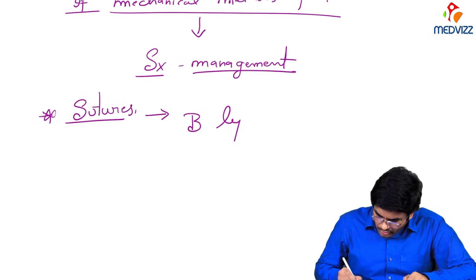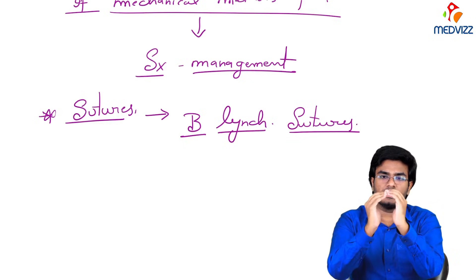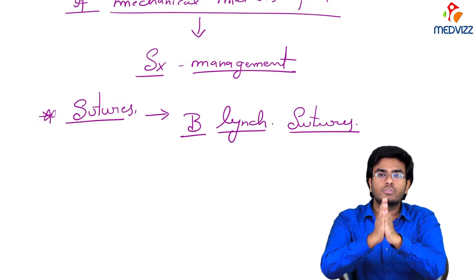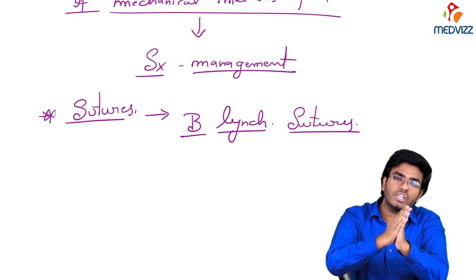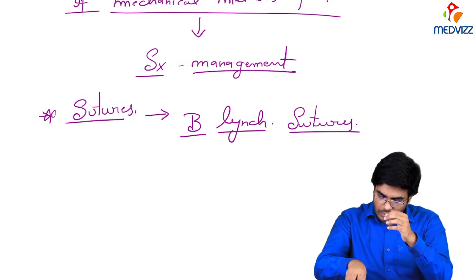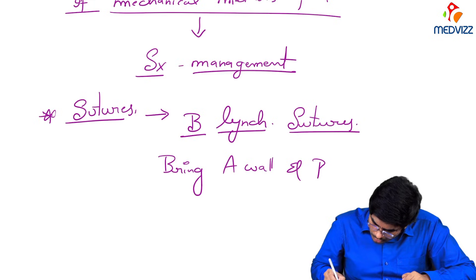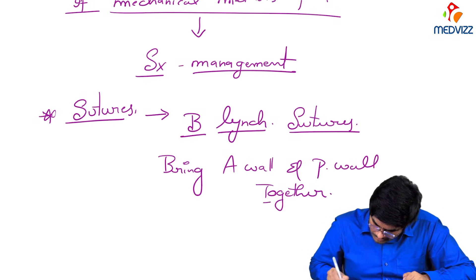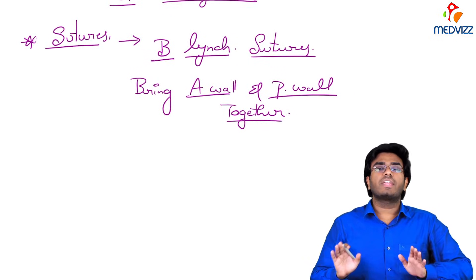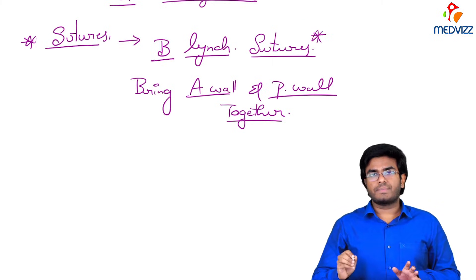The very important sutures for the exam are B-Lynch sutures. When you apply B-Lynch sutures, the anterior wall of the uterus and the posterior wall come together and become approximate, so that the anterior wall applies pressure on the posterior wall and vice versa. They are tightly adhered together, which decreases bleeding. So B-Lynch sutures bring the anterior and posterior walls together.